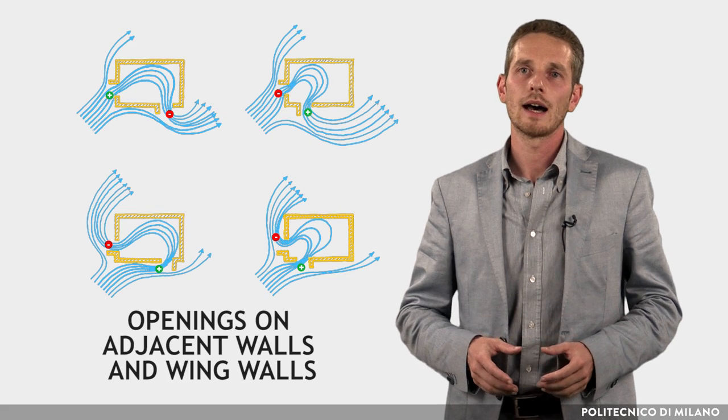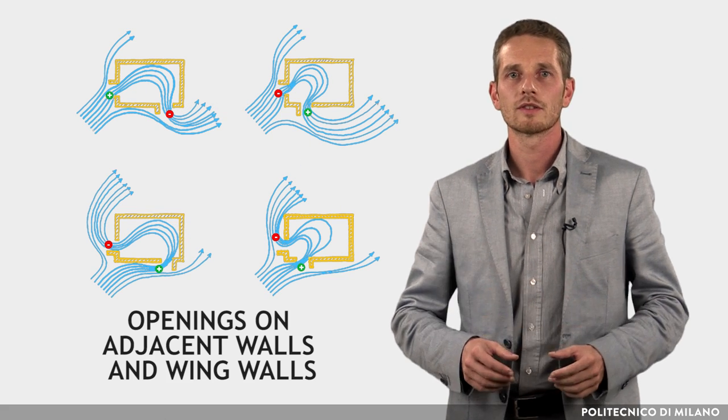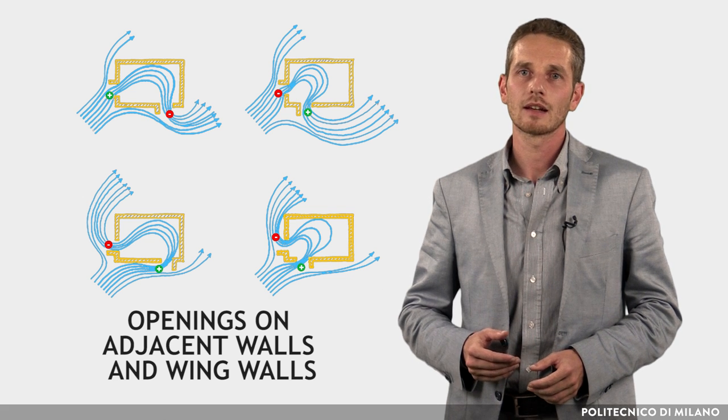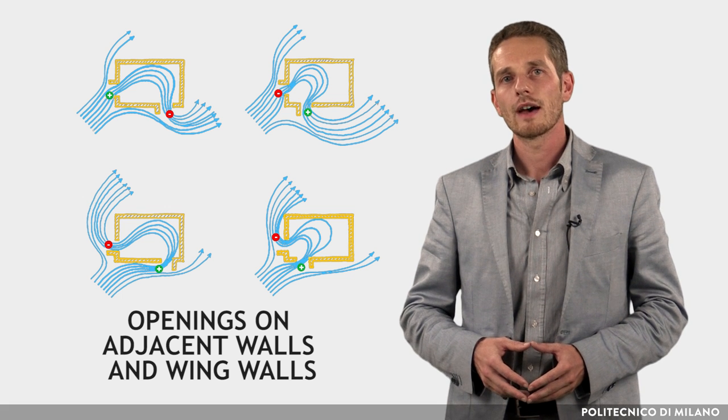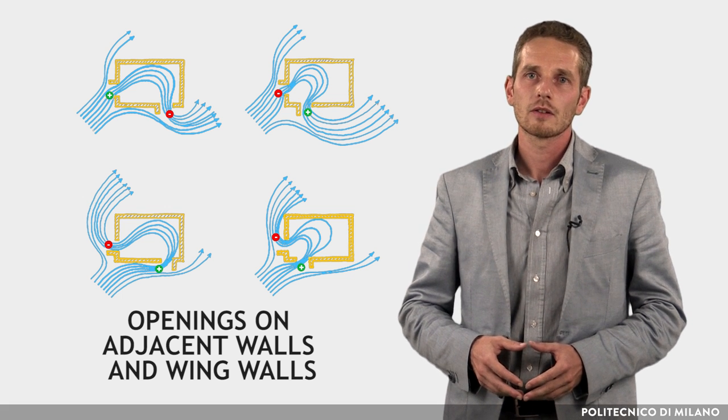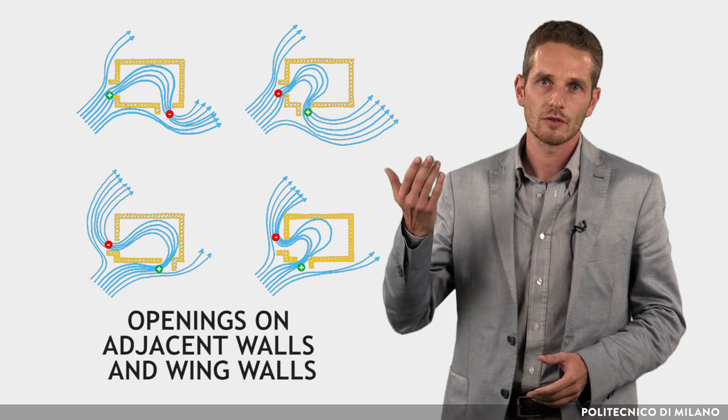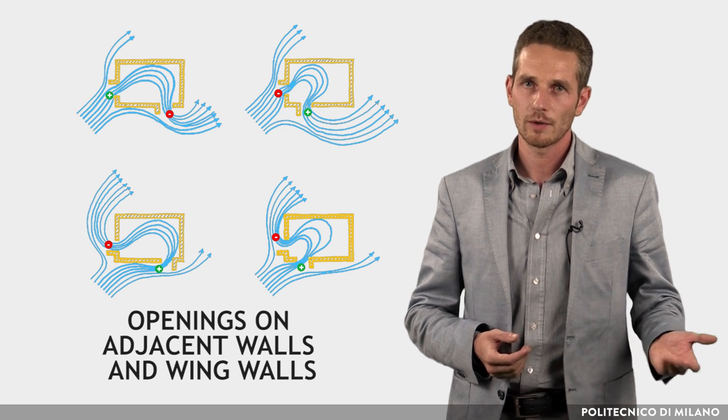If the room has openings on adjacent walls, wing walls can significantly increase the effectiveness of natural ventilation. Note that in the picture, green circles represent higher pressure zones while red ones mark the lower pressure zones.